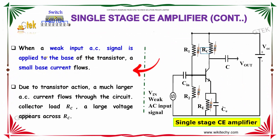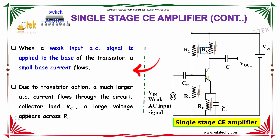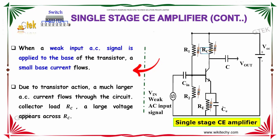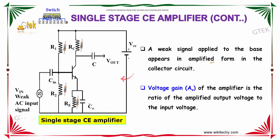When an AC input signal is applied to the base of the transistor, a small base current flows. Due to transistor action, a much larger AC current flows through the circuit and collector load RC. A large voltage appears across RC. So, a big signal applied to the base appears in amplified form in the collector circuit.